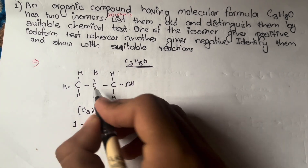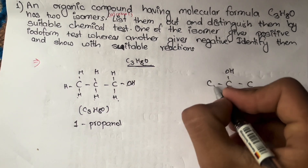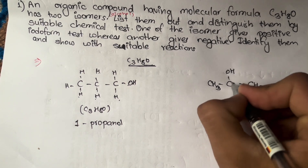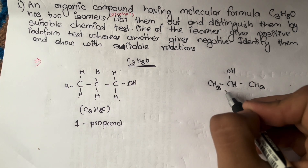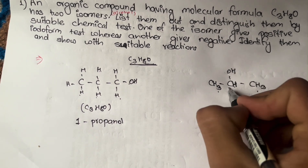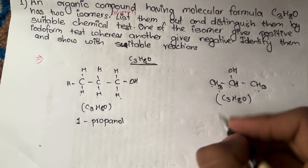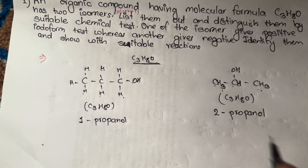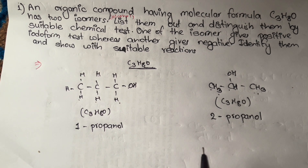For the second structure, the OH group is on carbon number 2. Carbon is tetravalent with 3 hydrogens on each side, giving C3H8O again. This is 2-propanol — the IUPAC name is 2-propanol, with the OH on carbon number 2. These two are isomers of C3H8O.